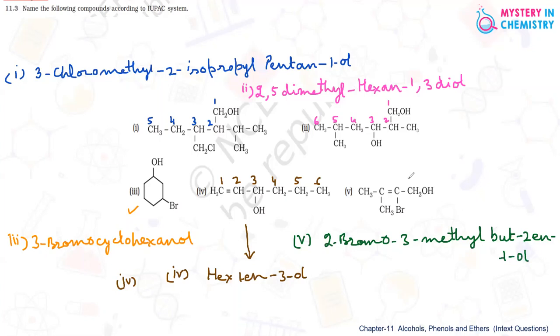So the final name of the fifth compound is 2-bromo-3-methylbut-2-en-1-ol.